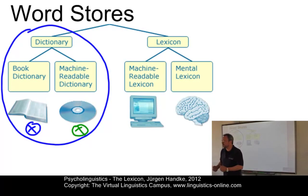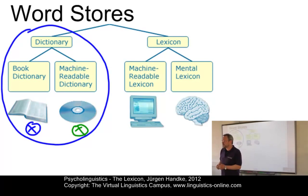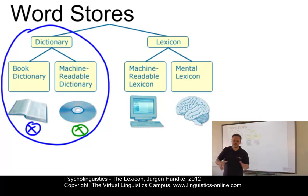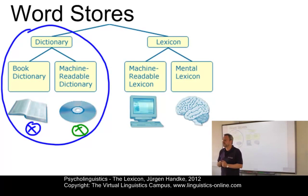The most common types of book dictionary are encyclopedic monolingual dictionaries, bilingual dictionaries, or dictionaries for special purposes, such as dictionaries of synonyms. Machine-readable dictionaries are similar; however, they are delivered on specific storage devices such as CD-ROMs or the World Wide Web.